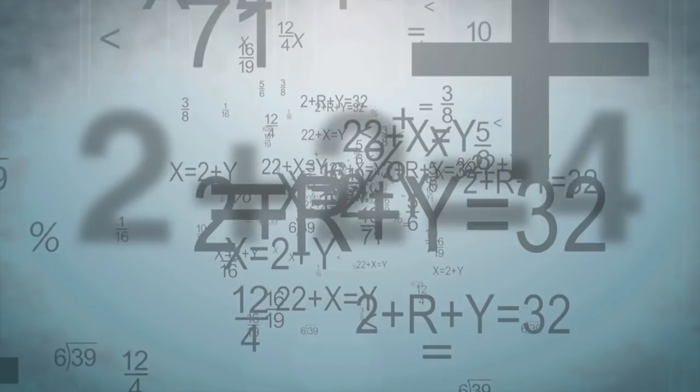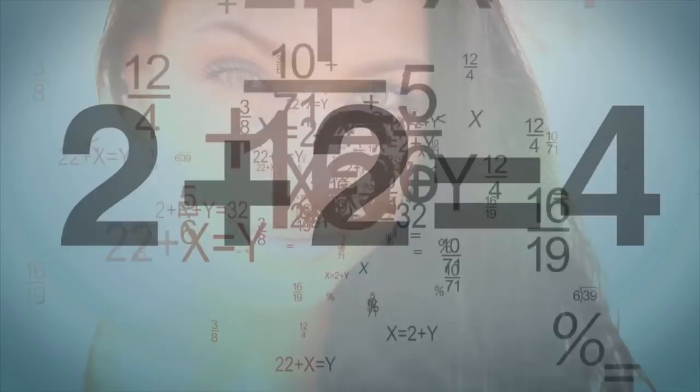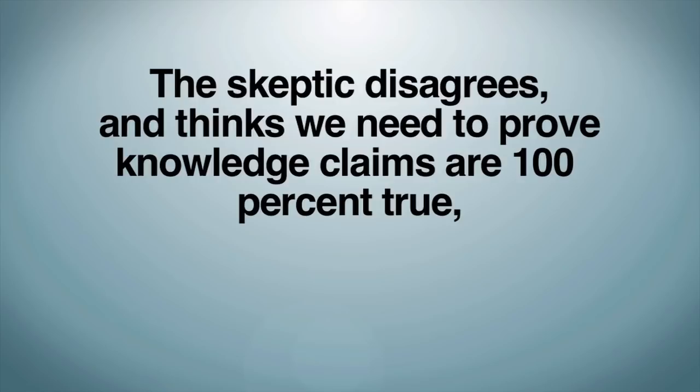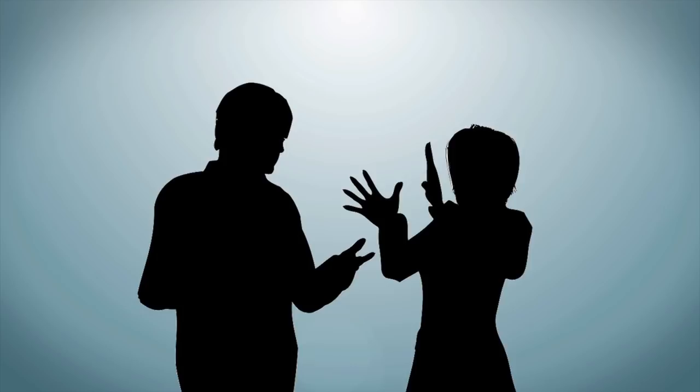For example, we do not doubt all the mathematical knowledge which shows us two plus two equals four unless the skeptic can give us reason to think so. We do not doubt we are conscious or that our cognitive faculties work unless the skeptic can give us reason to think so. The skeptic, of course, disagrees and thinks we need to prove knowledge claims are 100% true or else we should doubt them.